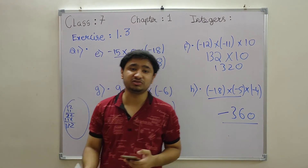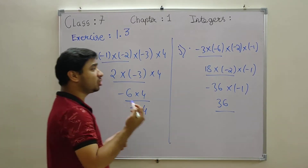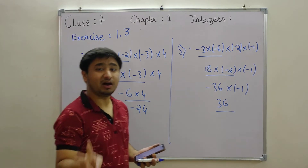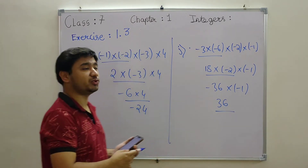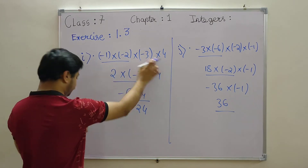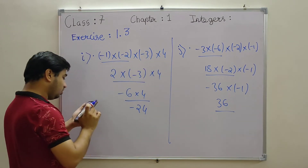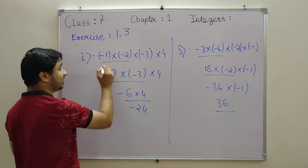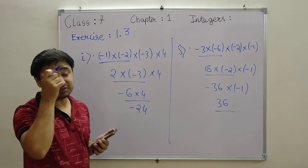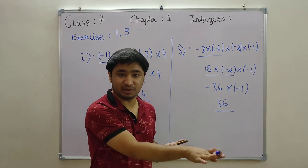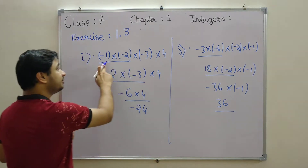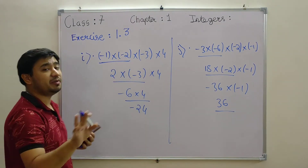Moving to the next option — 4 elements are there, no tension. We look carefully at the question: minus 1 into minus 2 into minus 3 into 4. We take two at a time: minus 1 into minus 2 — minus into minus gives plus. Then that result into minus 3 — plus into minus gives minus. And so on, multiply all the numbers.